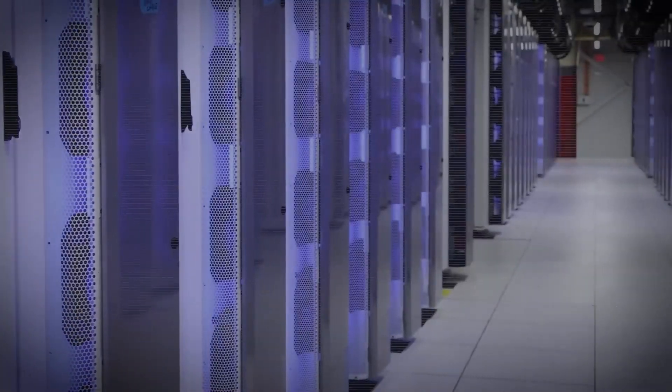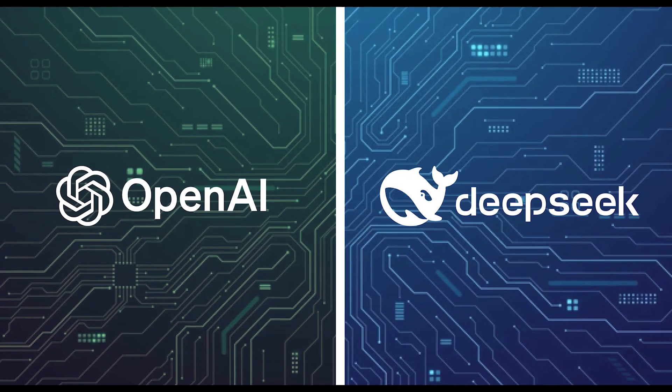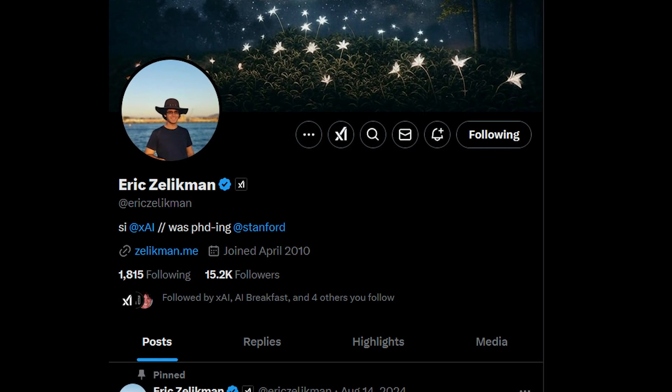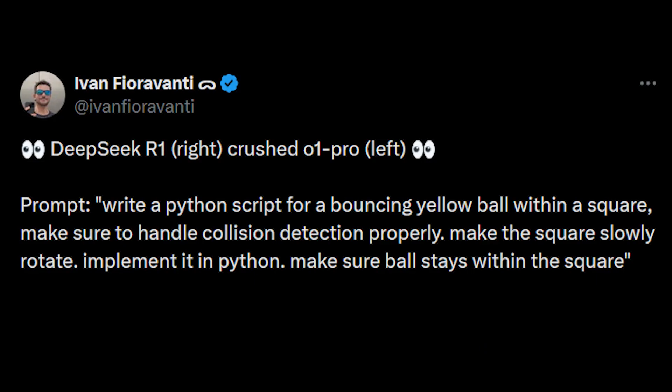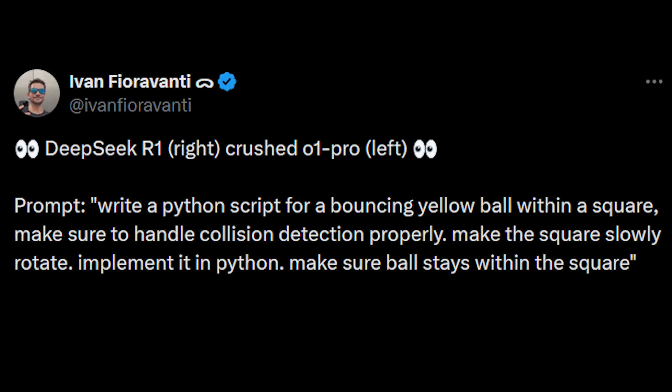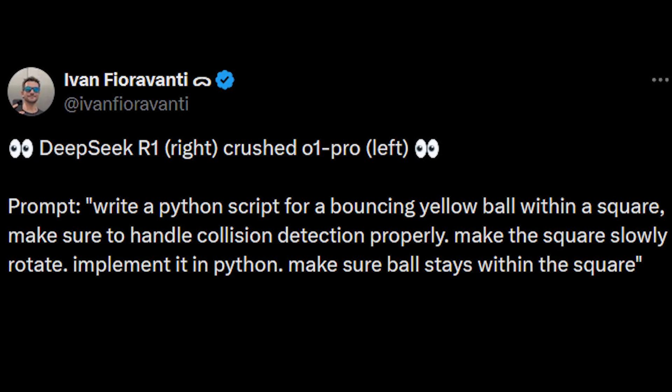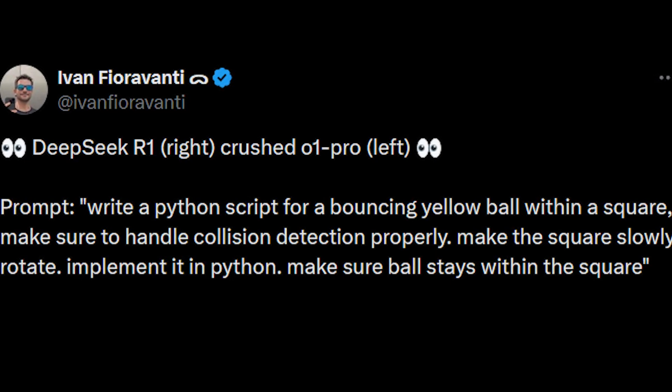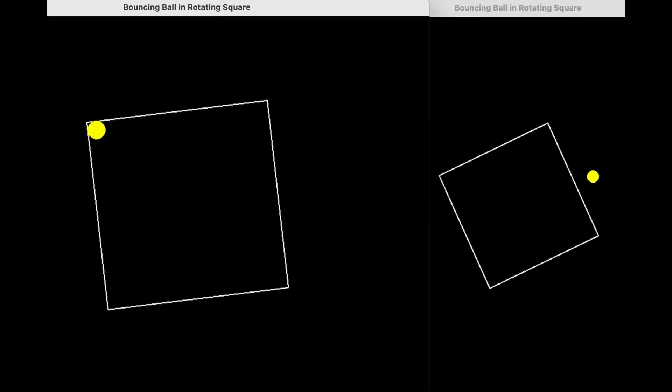So, how did Grok 3 crush both O1 and R1? There was a fight between O1 and R1 to settle which one is the best model in the world, when Eric Zelikman, one of the top AI researchers at XAI, entered the arena with Grok 3. The challenge was to write a Python script that would animate a bouncing yellow ball inside a square, ensuring proper collision detection with the square rotating slowly, all implemented in Python, while keeping the ball within the square's boundaries.